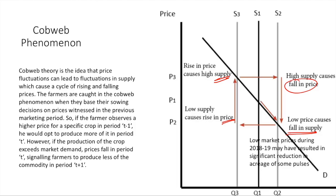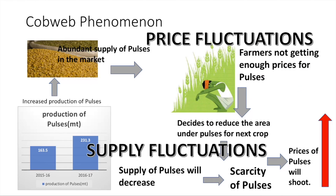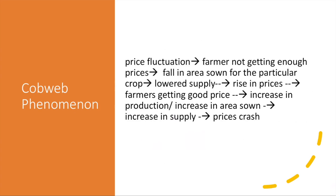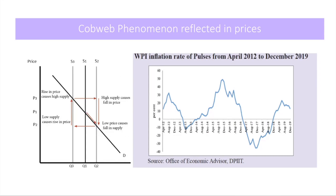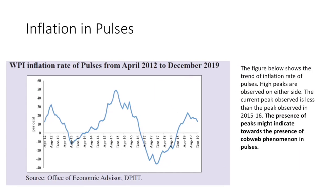Looking at the graph: low supply causes rising prices, then rising prices cause high supply, then high supply causes a fall in prices — and this goes on in a cycle. The same cycle is reflected in the steep rise and fall in the prices of pulses. The WPI inflation rate for pulses is represented here, and the steep peaks on either side of the graph represent the Cobweb phenomenon. These peaks show the presence of the Cobweb phenomenon in the case of pulses, as highlighted by the survey.